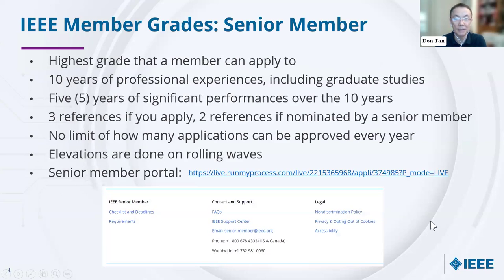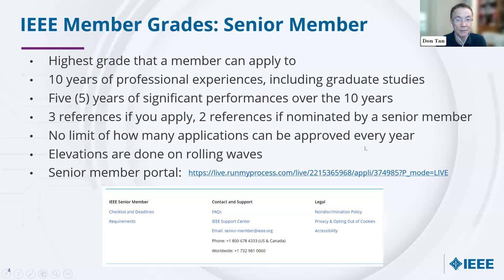The senior member grade is the highest grade that a member can apply to, and it's a prerequisite to be a fellow. For senior member qualifications: 10 years of professional experience, including graduate studies. Within those 10 years, you should have five years of significant performance. Three references are required if you apply by yourself, but if you are nominated by a senior member, only two additional references are required, for a total of three. There's no limit on how many applications can be approved every year.